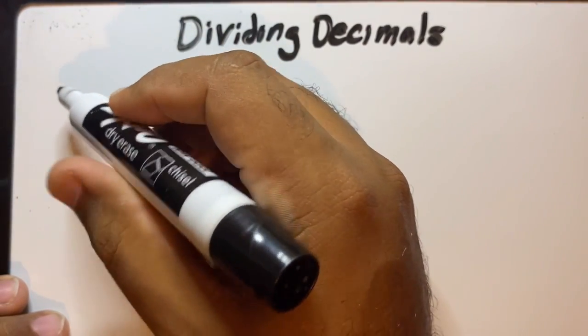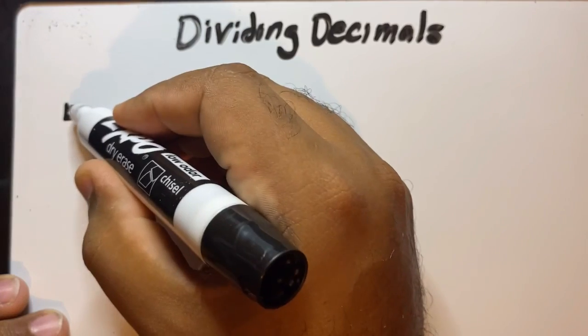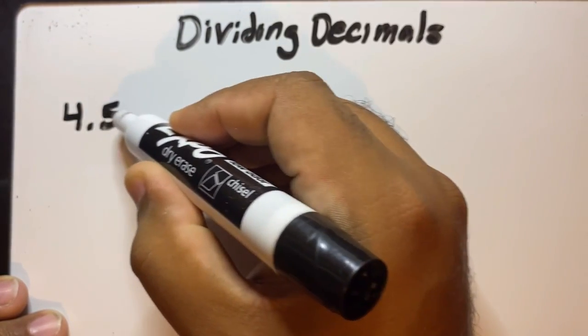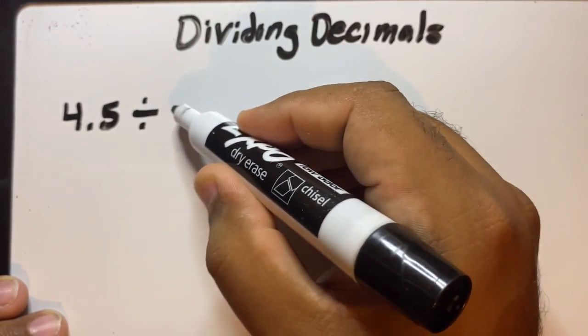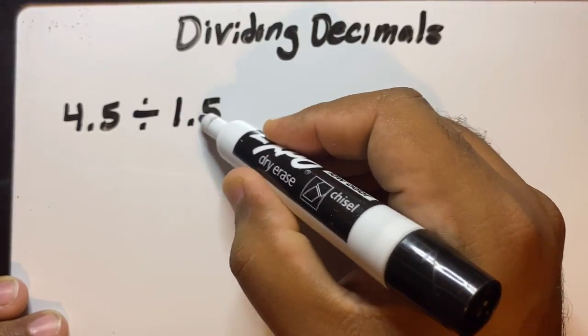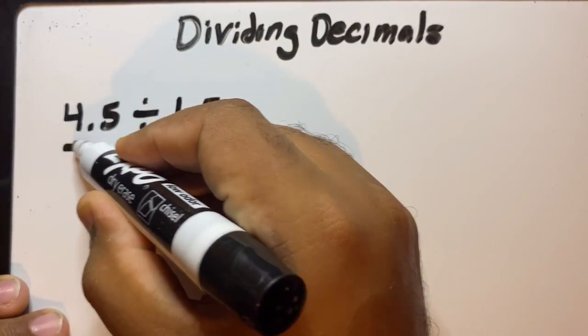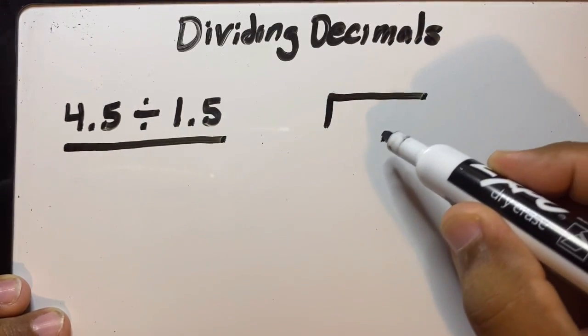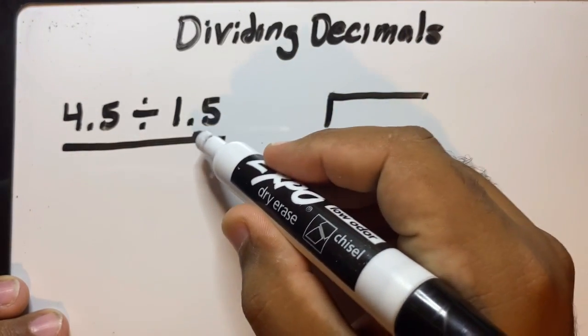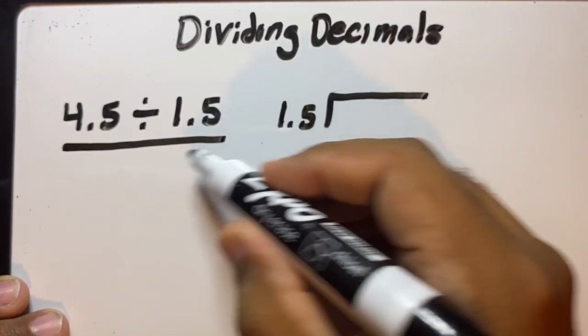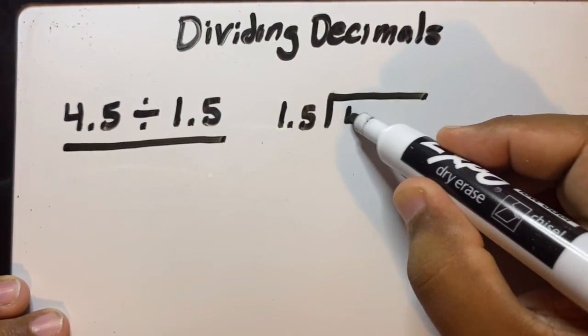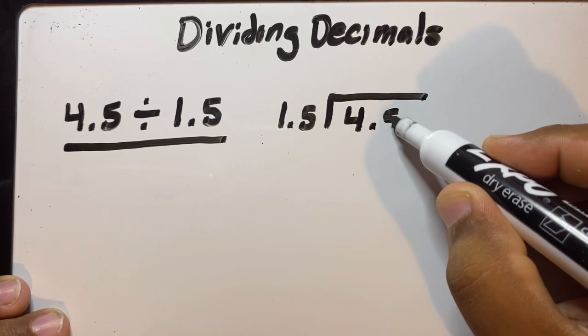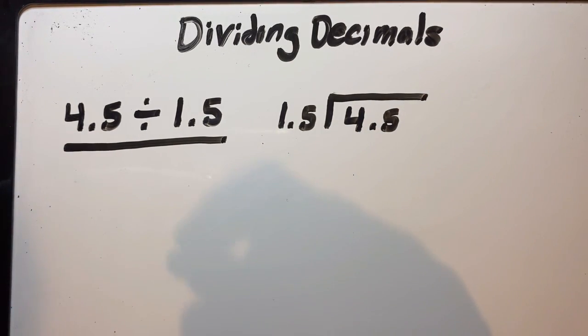We're going to start with something simple like 4.5 divided by 1.5. To write this as a division equation, the number on the right goes on the outside and the number on the left goes on the inside. For those who already know the answer, I congratulate you. However, for those who do not, please don't panic. This is a really easy fix.